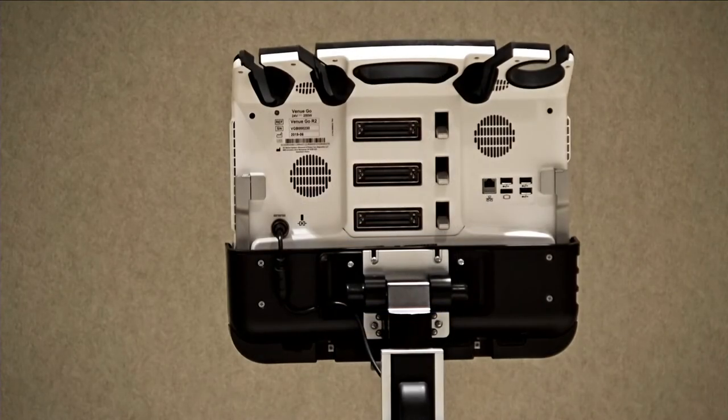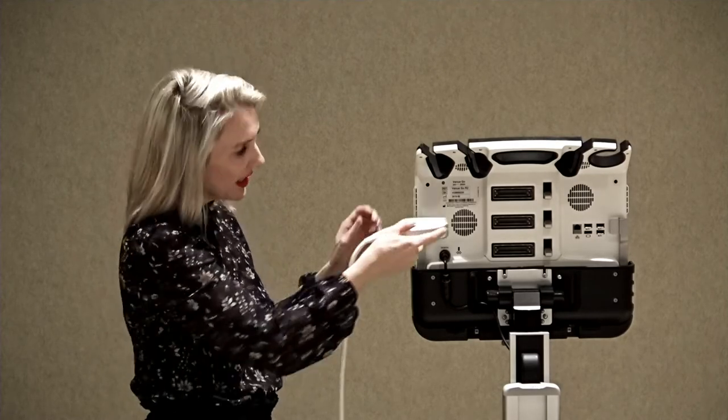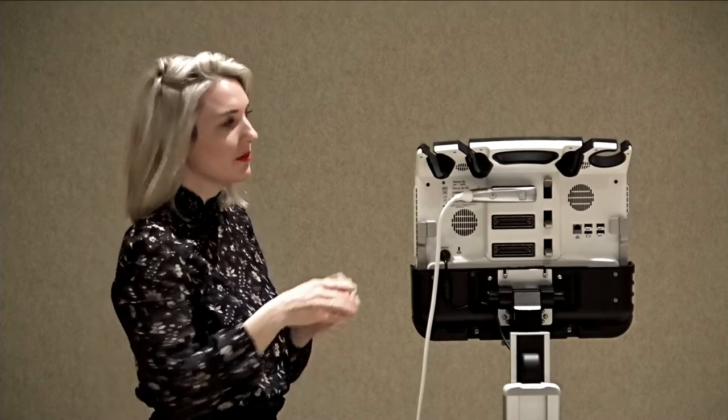The Venue Go has three probe ports on the back of the system. To connect a transducer, insert the probe into the port, then lift the lever to lock it into place. To remove the probe, lower the lever, then pull it straight out.